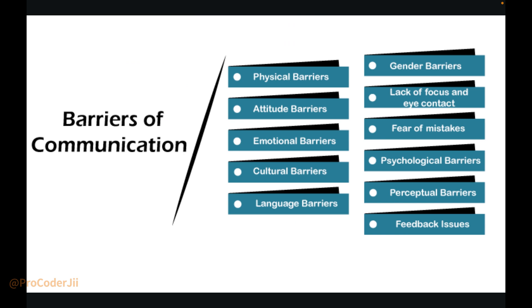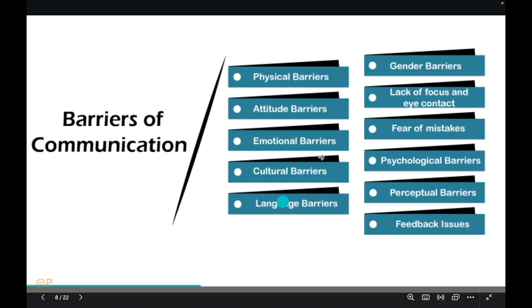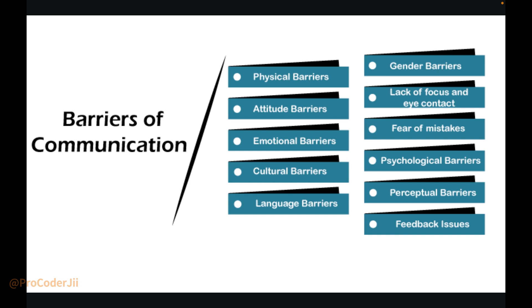Now, barriers of communication — barriers means obstacles. What are the obstacles of communication? Physical barriers: everything in our environment like noise and sounds. Attitude barriers: when someone shows attitude and ignores what you say. Emotional barriers: when someone gets emotional and loses focus on the topic. Cultural barriers: different cultures mean different languages, different body language, different types of people. Language barriers are similar — different people, different languages across states.